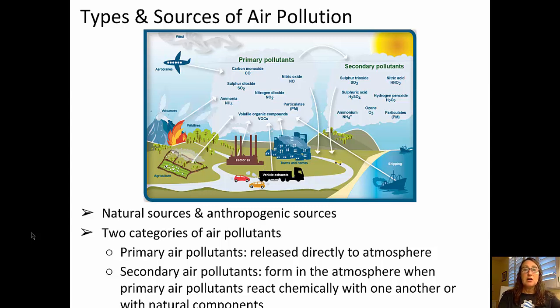Primary air pollutants are those pollutants that are released directly into the atmosphere — things like carbon dioxide, ammonia, nitrogen dioxide, particulates, and volatile organic compounds.